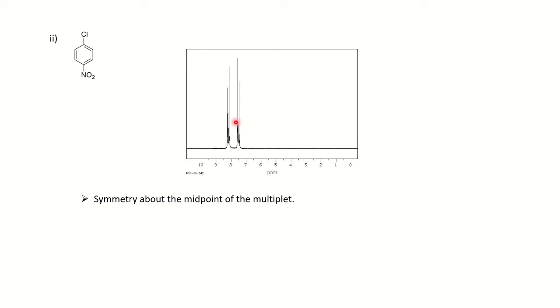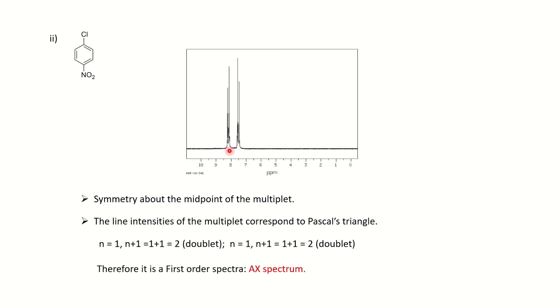So now again to find out whether first or second order, we will see the symmetry about the midpoint of the multiplet here. And next is the line intensity is according to the Pascal's triangle. You can see N plus 1 and it is nicely spread also here. In second order, you won't get the Pascal's triangle multiplicity and you cannot identify and it is not widely spread also. So therefore, we can say it is a first order spectrum and we can say for both the protons AX spectrum. It is nicely spread in the alphabet similarly here and so we can say it is AX spectrum and so it is first order spectrum.